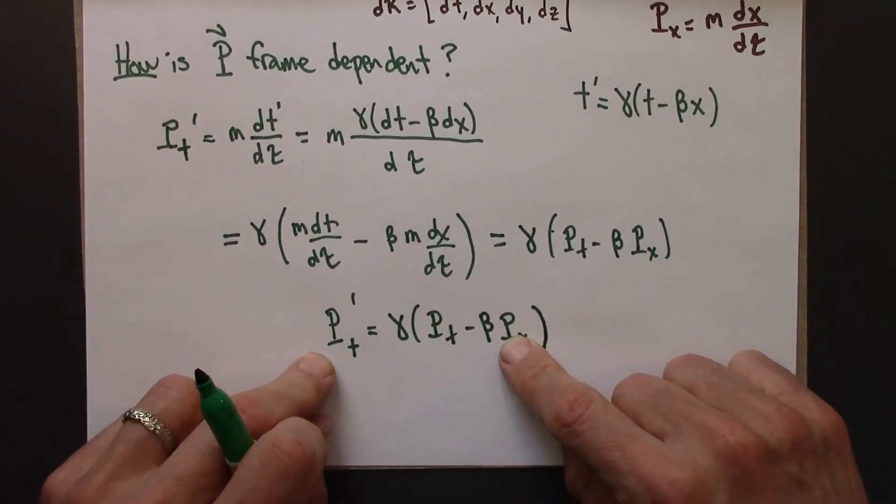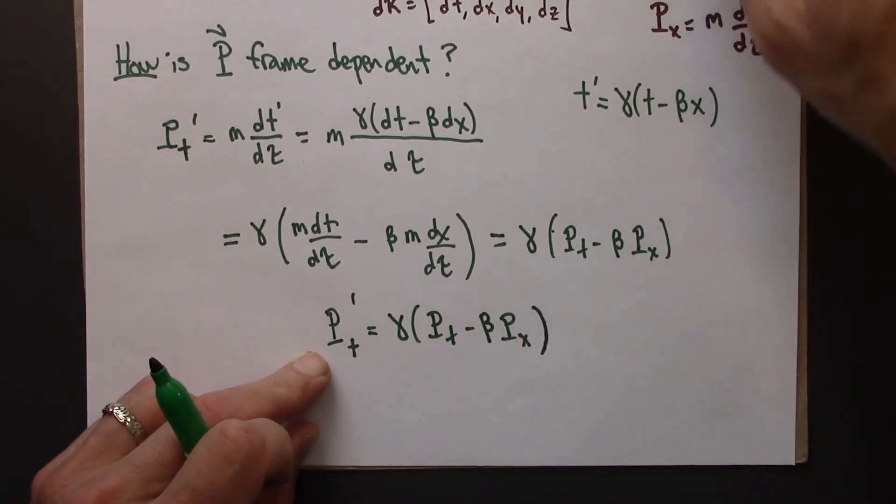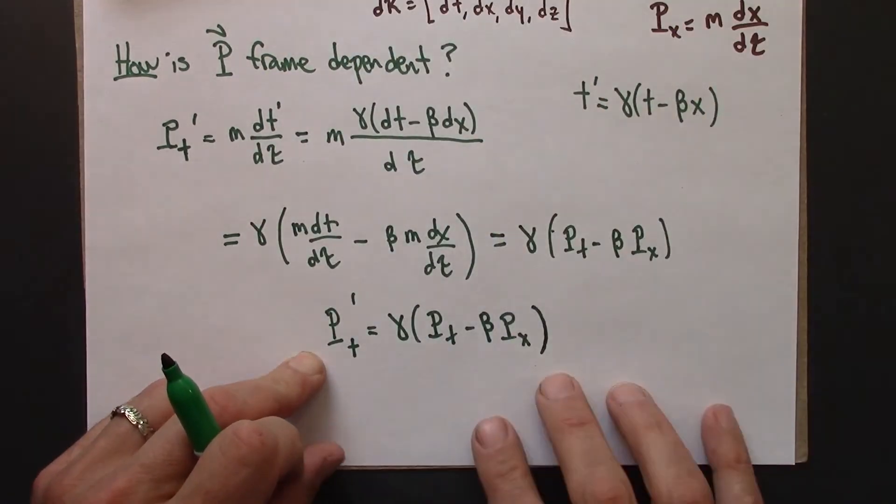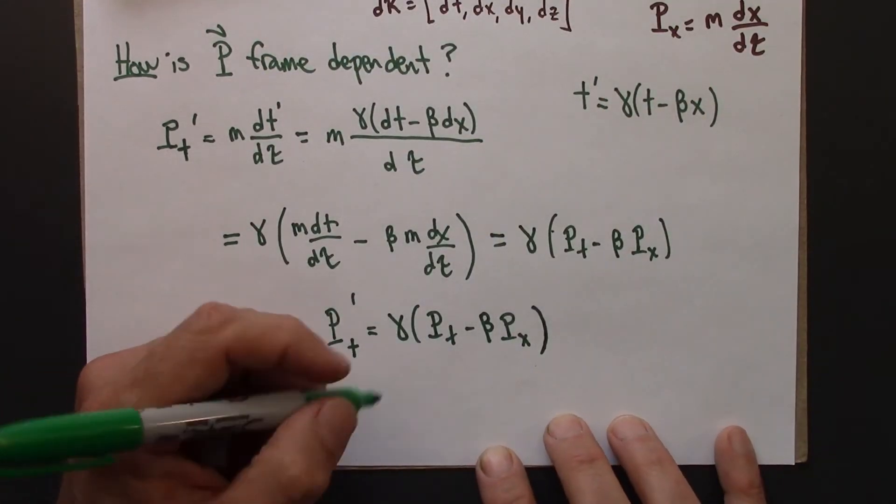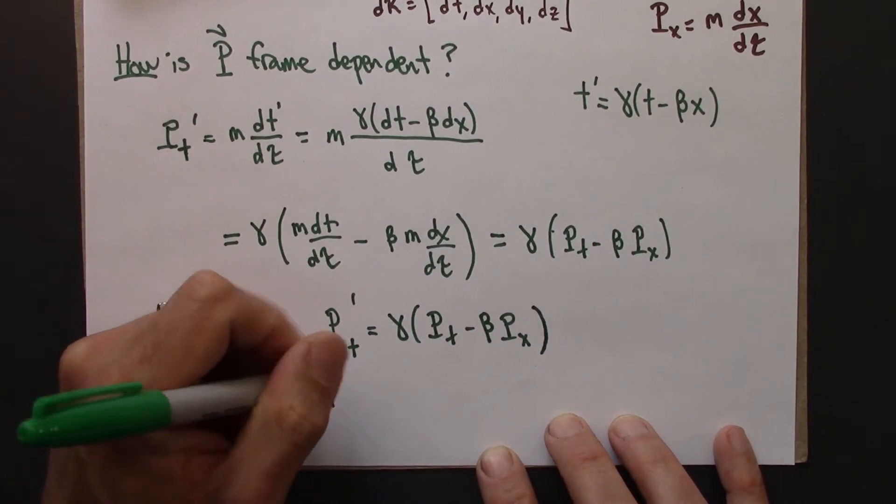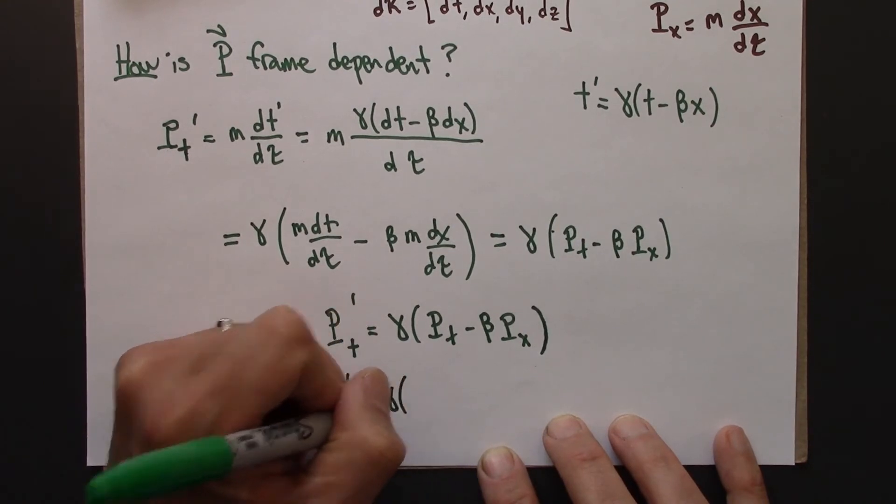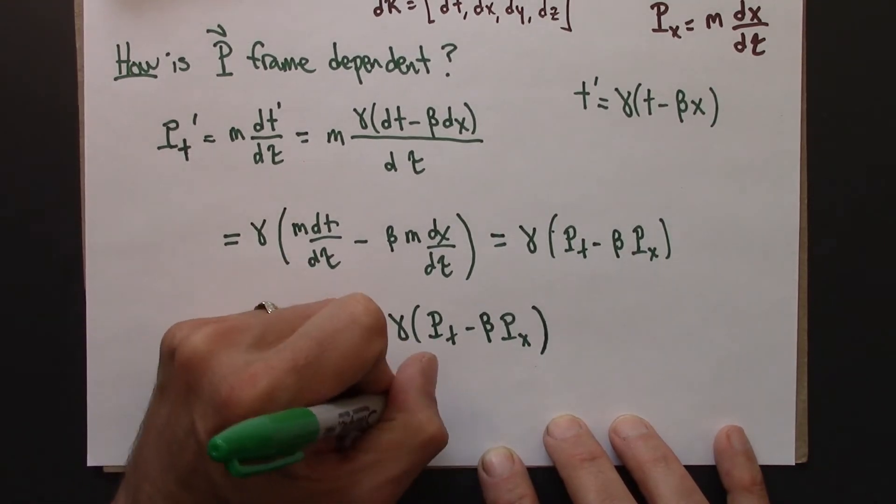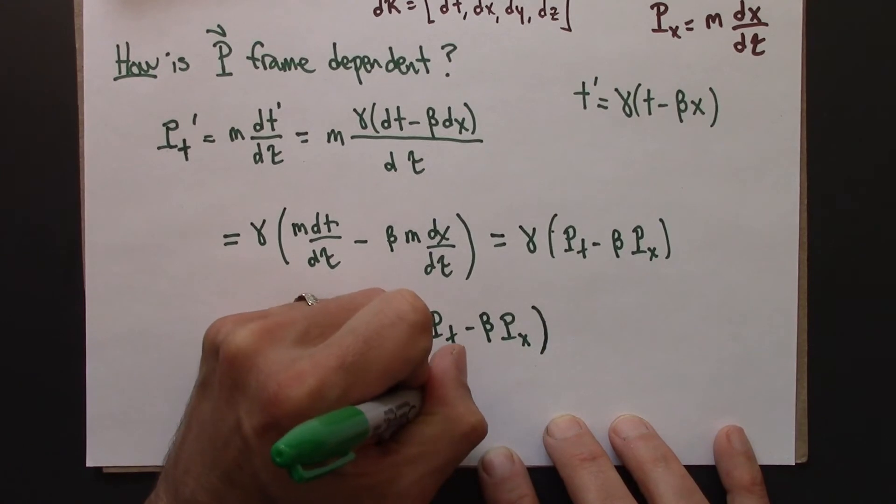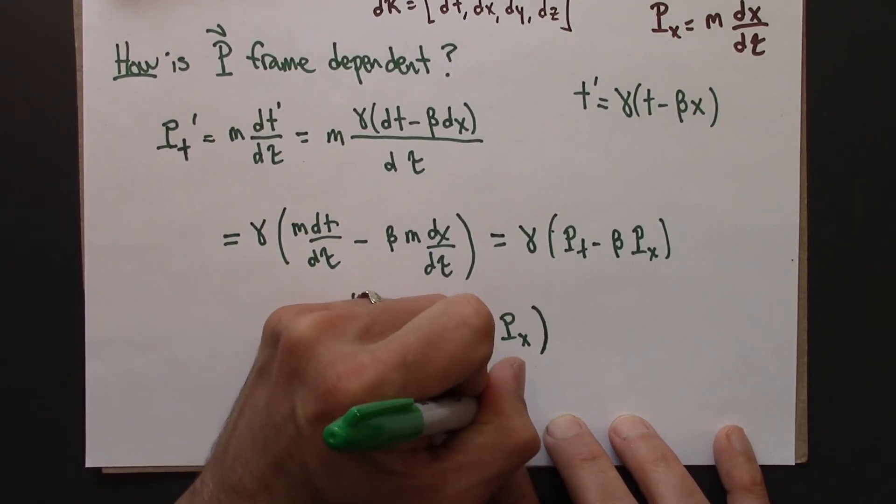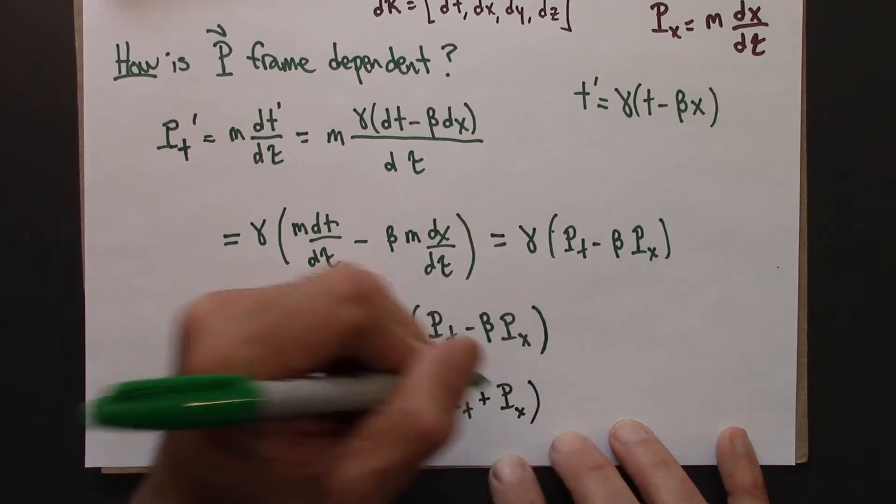Okay, so we have that result. I could do the exact same thing with Px prime. And the math would work out almost identical. And I would end up with this. I'm going to write this for the sake of completeness: Px prime is gamma (-beta Pt + Px).